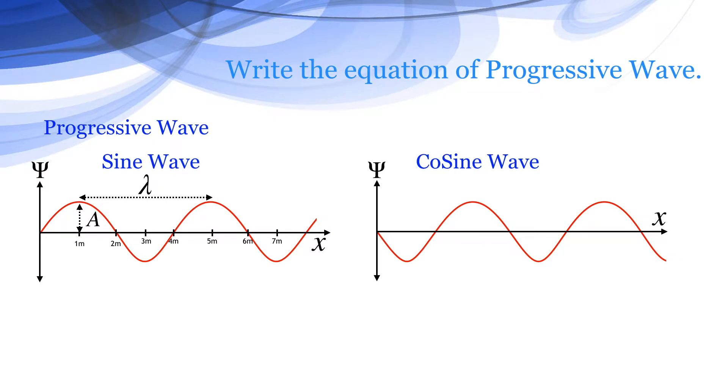Waves can be represented as sine wave or cosine wave. If a wave is starting with the increasing value of y, it is considered as sine wave. And when it is starting with the decreasing value of y, it is considered as cosine wave.